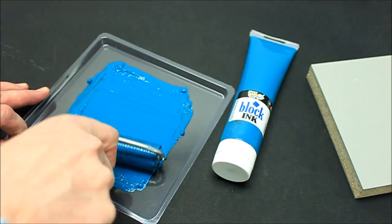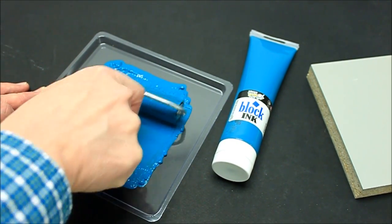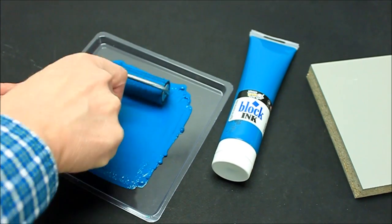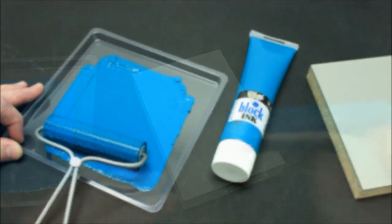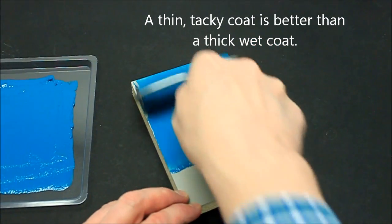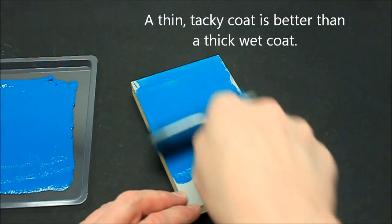Roll off the first color of HandyArt block printing ink in a plastic mixing tray. Ink the first Speedball linoleum block completely.